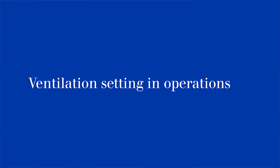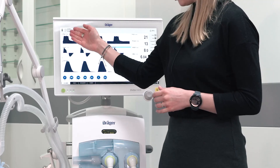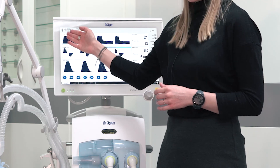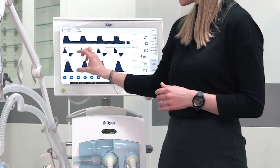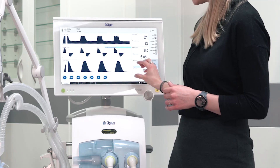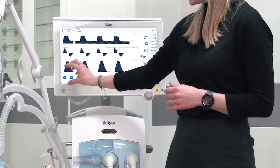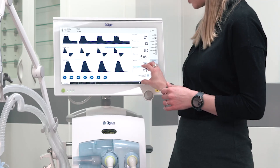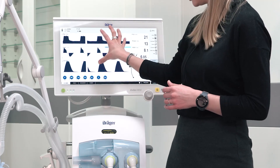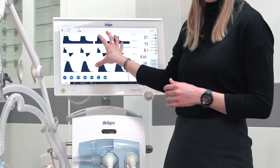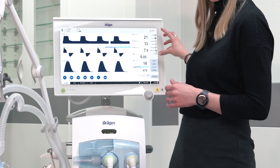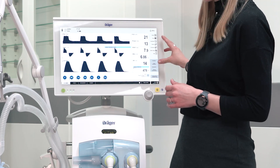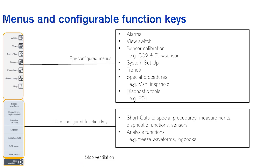Now we will show you how to adapt your ventilation settings in operation. On the top you can find your patient category and your respective ventilation modes. You can adapt your settings for your ventilation mode in the lower part of the screen. Centrally you can see your waveforms and measurements. On the right hand side you have further submenu structures and configured functional keys.